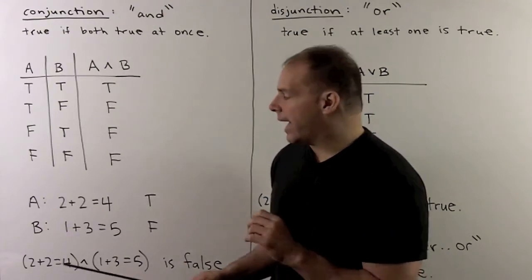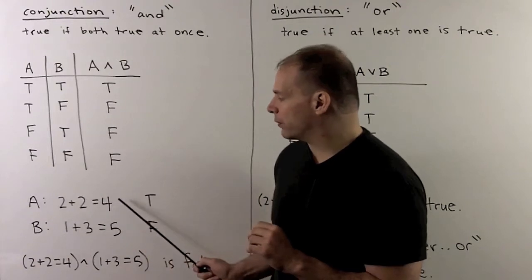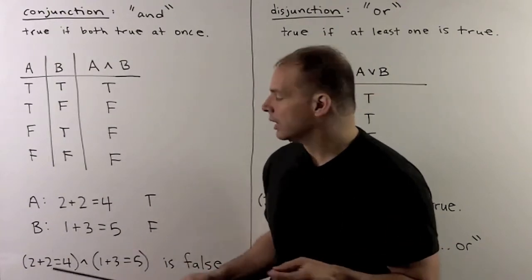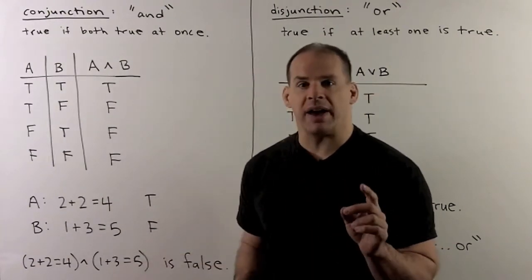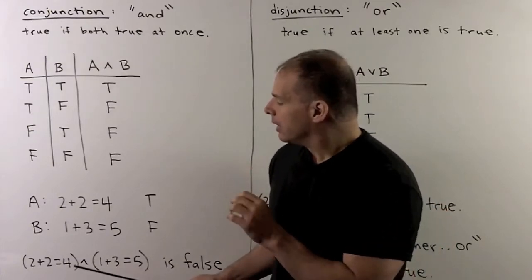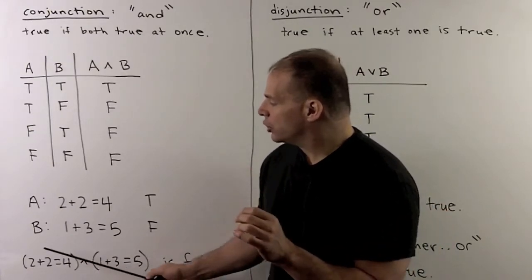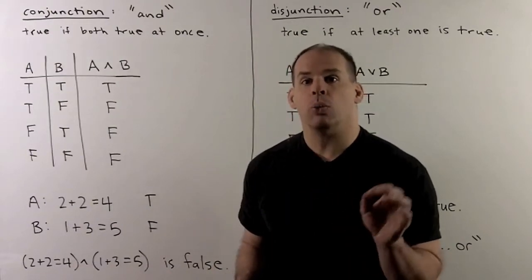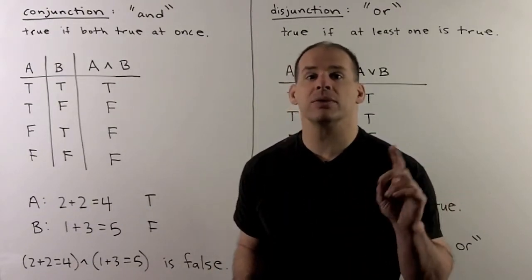For an example, well, A, the statement, 2 plus 2 is 4, which is true. B is the statement, 1 plus 3 is 5, which is false. Then, A and B, which is just 2 plus 2 is 4, and 1 plus 3 is equal to 5, is a false statement.